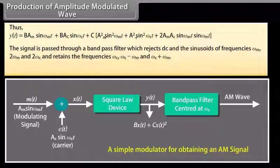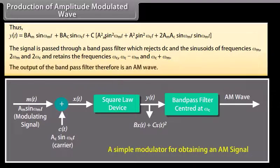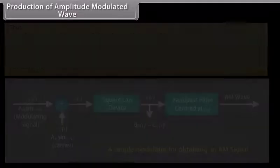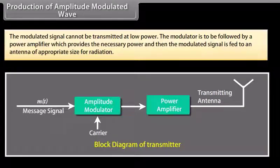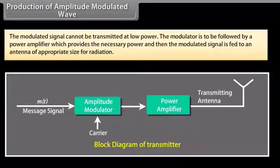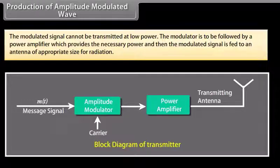The band-pass filter retains the frequencies ω_C, ω_C − ω_M, and ω_C + ω_M. The output of the band-pass filter is therefore an AM wave. The modulated signal cannot be transmitted at low power; the modulator is followed by a power amplifier which provides the necessary power, and then the modulated signal is fed to an antenna of appropriate size for radiation.